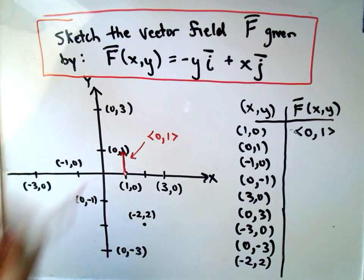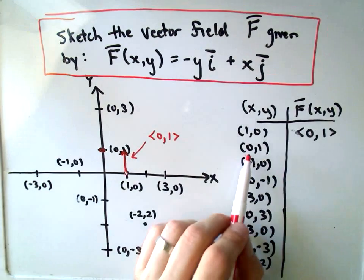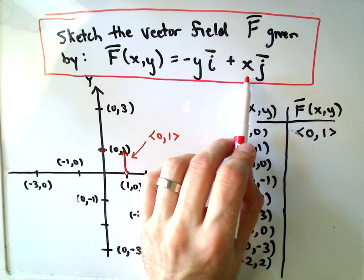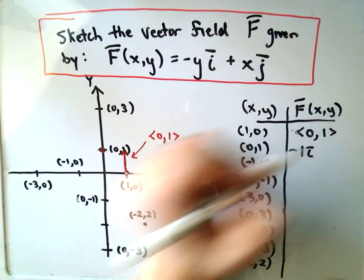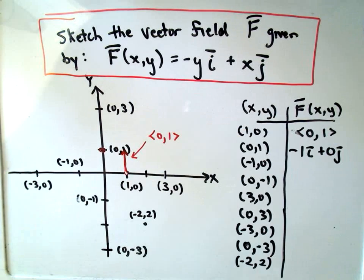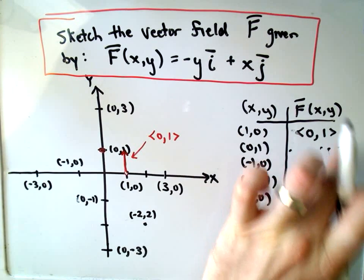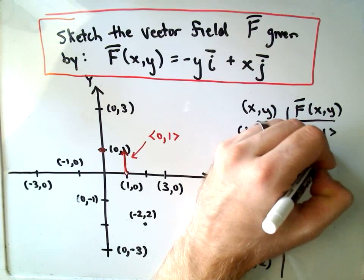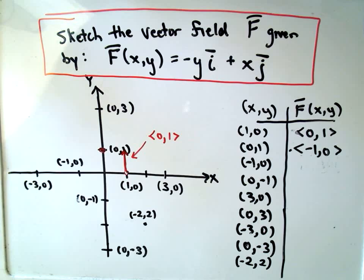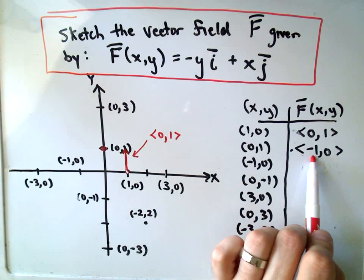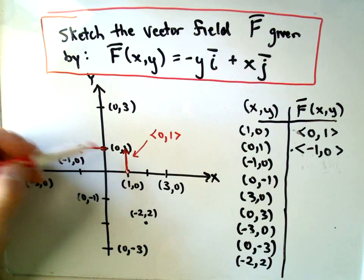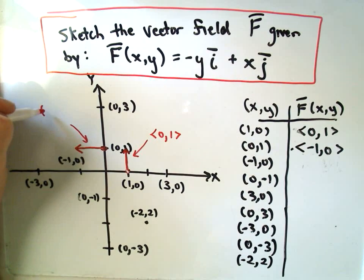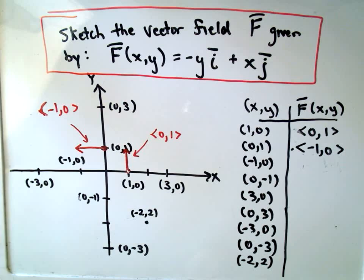Likewise, if we find the vector associated with the point (0,1). Well, if we plug zero in for x and one in for y, we would get negative one i plus zero j. And if we simplify that, we would get <-1,0>. So at the point (0,1), your vector is pointing one unit to the left, but it doesn't go at all up or down. So my vector at the point (0,1) would look like this vector. And really, this is all you're doing. You're just plotting a whole lot of points.